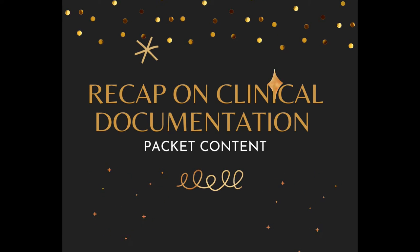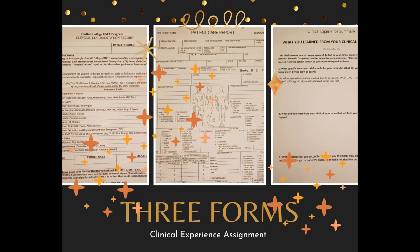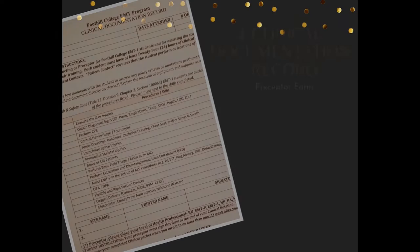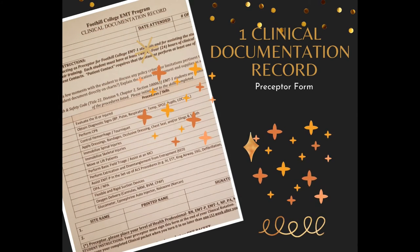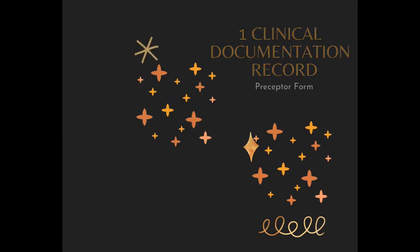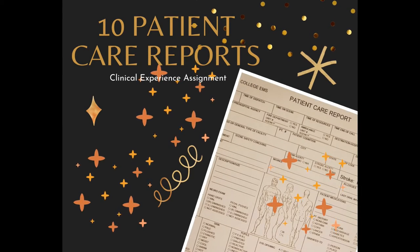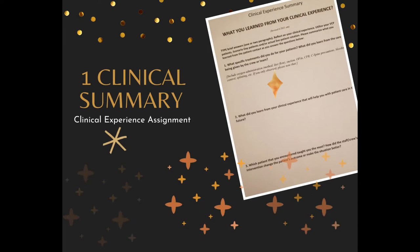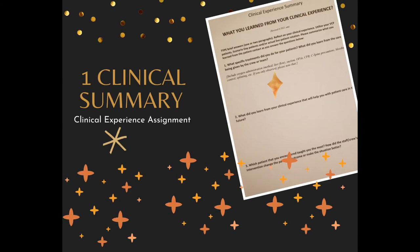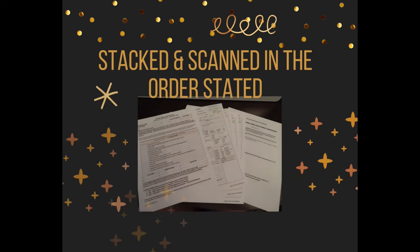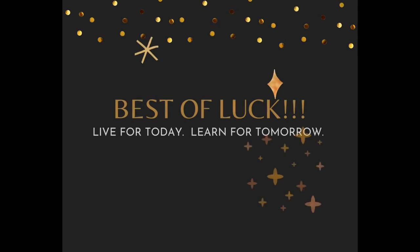Be sure to have your forms in order so that the preceptor cover sheet is first, followed by the 10 PCRs, and ending with the three-question summary. To recap, the packet must include three different forms: one, the clinical documentation record that serves as your cover sheet; two, ten patient care reports; and three, one clinical experience summary which will be the end page — stacked and scanned in the order stated.